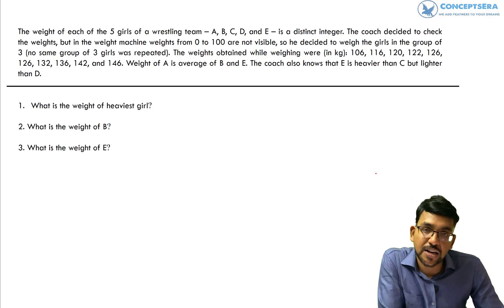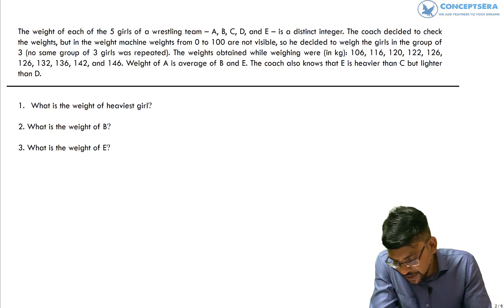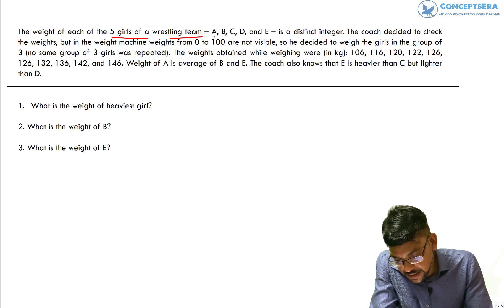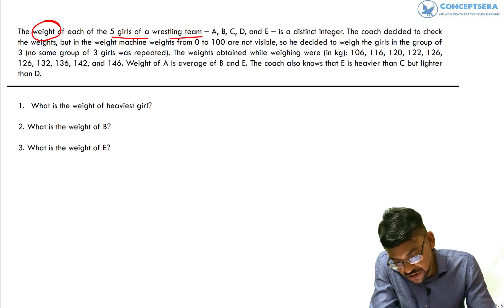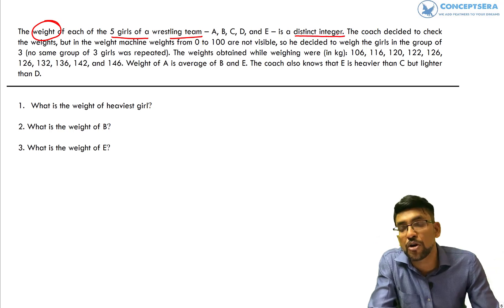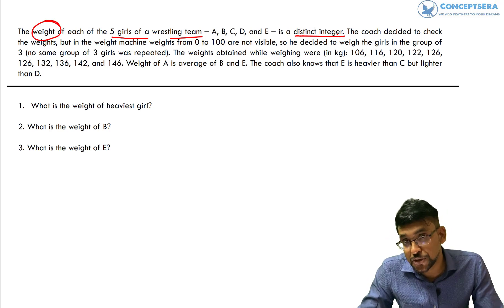Let's get started and try to understand what exactly is given to us in the caselet and how we can decode it. It is given to us the weight of each of five girls of a wrestling team and the girls' names are A, B, C, D, E. Their weight is a distinct integer — meaning weight is an integer and weight is distinct for each person.